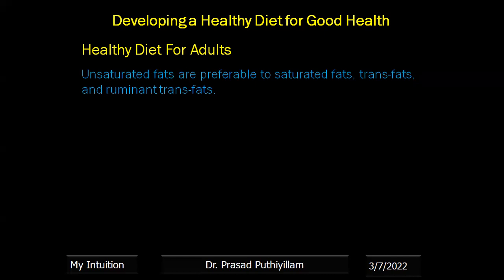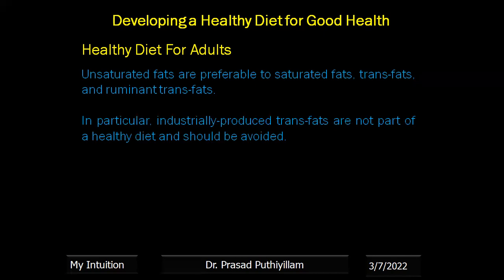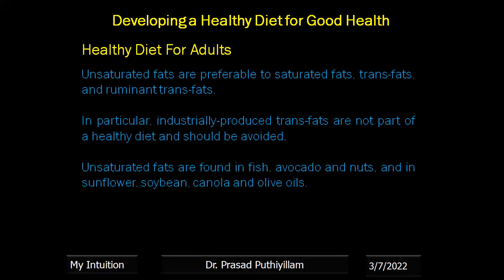Unsaturated fats are preferable over saturated fat and trans fat. In particular, industrially produced trans fats are not part of a healthy diet and should be avoided. Unsaturated fats are found in fish, avocado, nuts and in sunflower, soya, peanut, canola and olive oil.